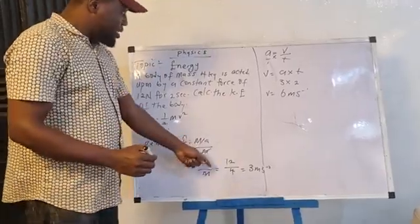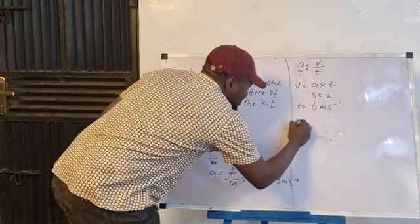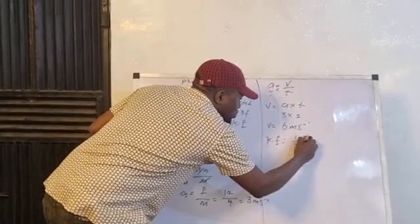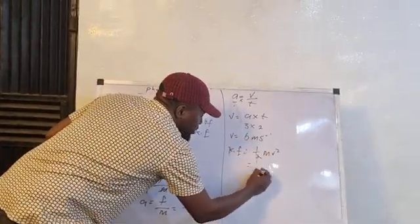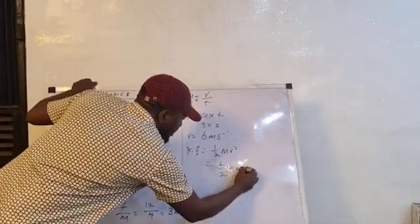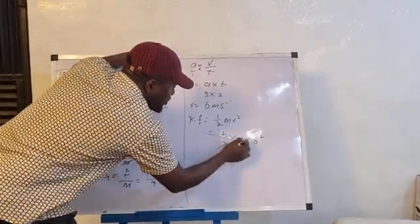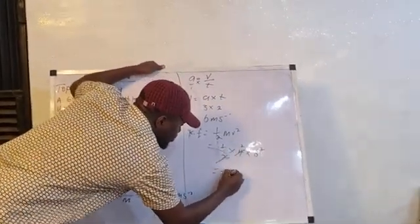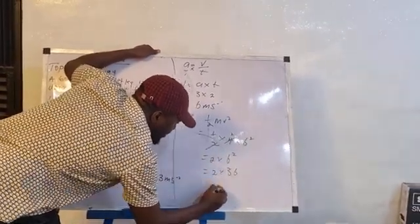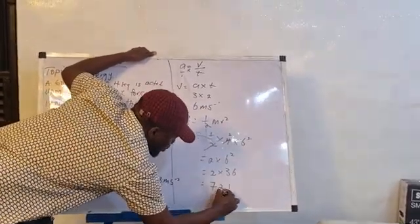So we now have the mass, we now have the velocity, and we have the formula for kinetic energy. So, the kinetic energy of the body in the question, which is simply 1 over 2 mv squared, this will become 1 over 2 times the mass, which we gave as 4, times the velocity we have solved, which is 6, 6 squared. And when we do that, 2 going to 4, we have 2. That means 2 times 6 squared. And 6 squared is the same thing as 36. And when we multiply that by 2, that will give us 72 joules.